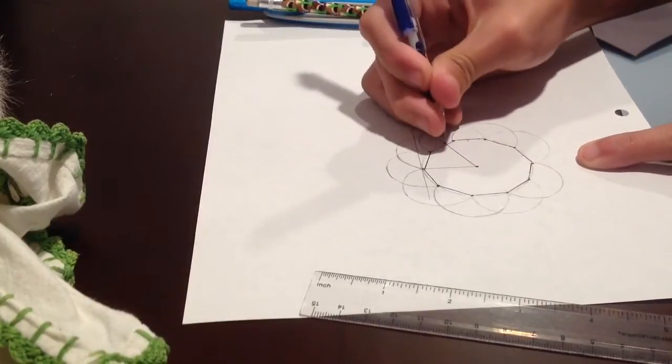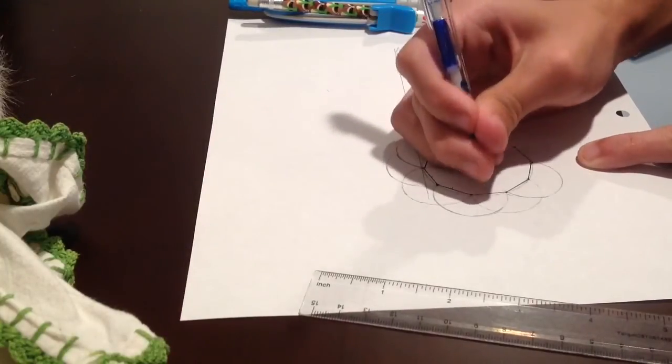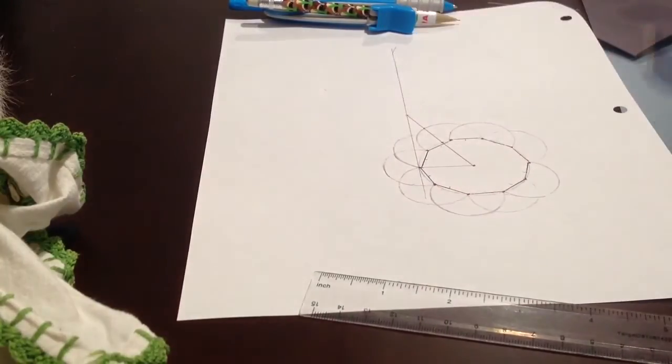And that's it. You now have a regular decagon, if you did it right. You can then erase all the circles and extra lines.